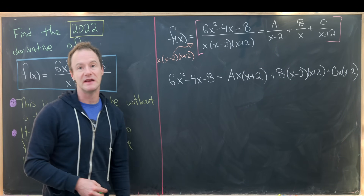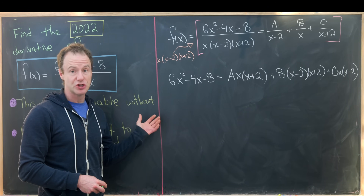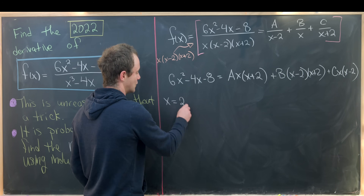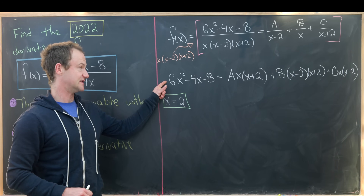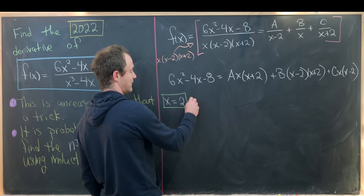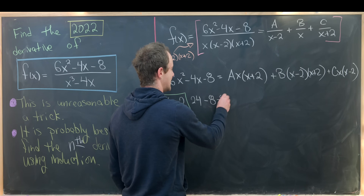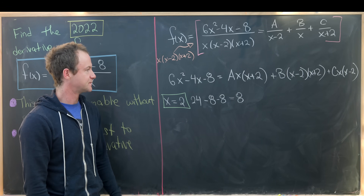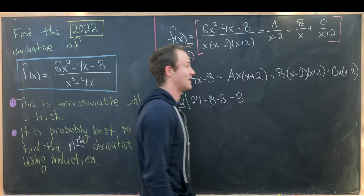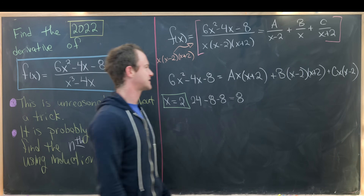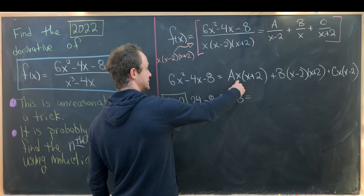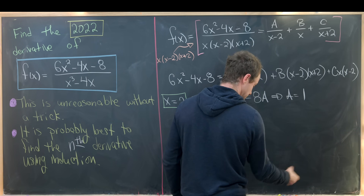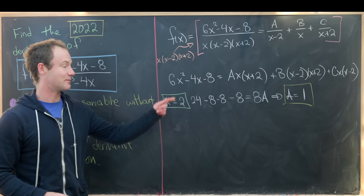We'll set x equal to 2, 0, and negative 2 successively. Plugging in x equals 2: the left side gives 24 minus 8 minus 8, which equals 8. On the right, the last two terms collapse to 0, leaving A times 2 times 4, which is 8A. So A equals 1.